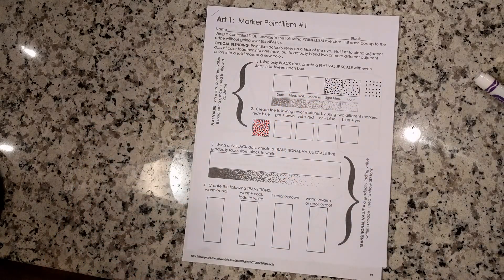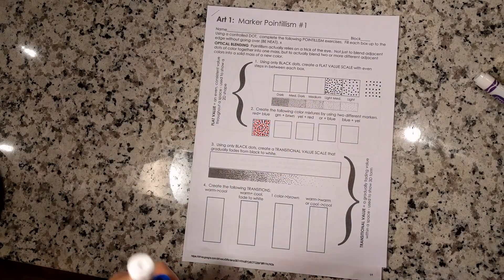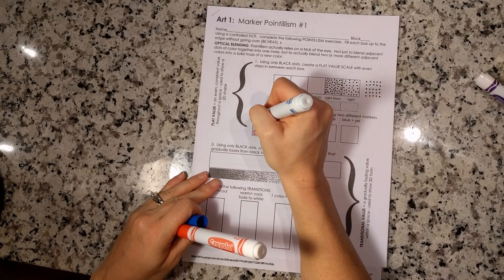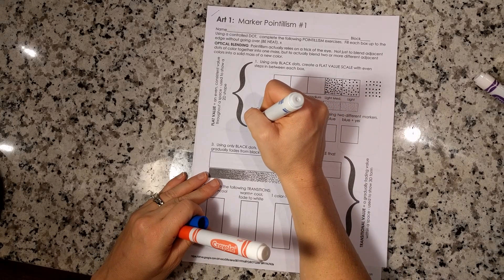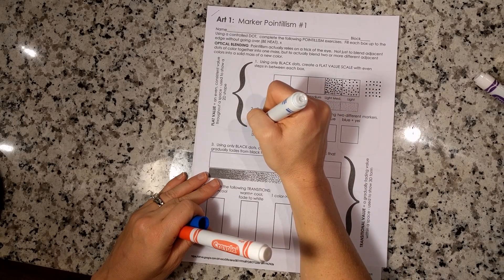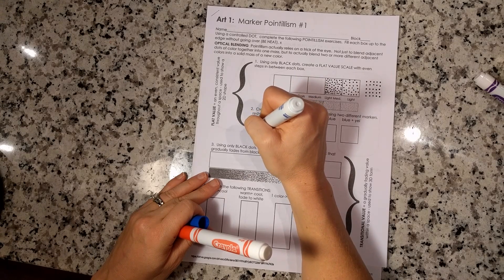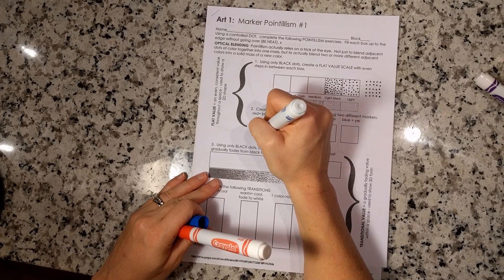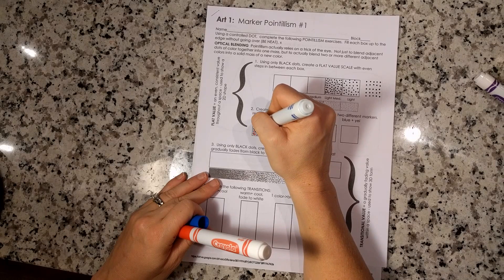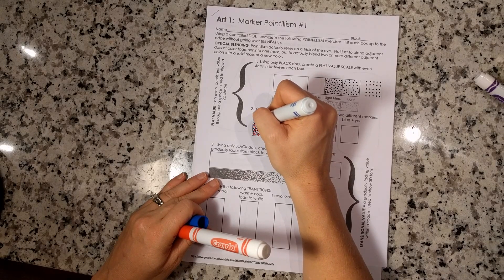As I look at it and kind of blur my eyes, I still see the separate colors. So I'm going to continue switching between blue and red until I have a consistent value and a consistent color across that box.